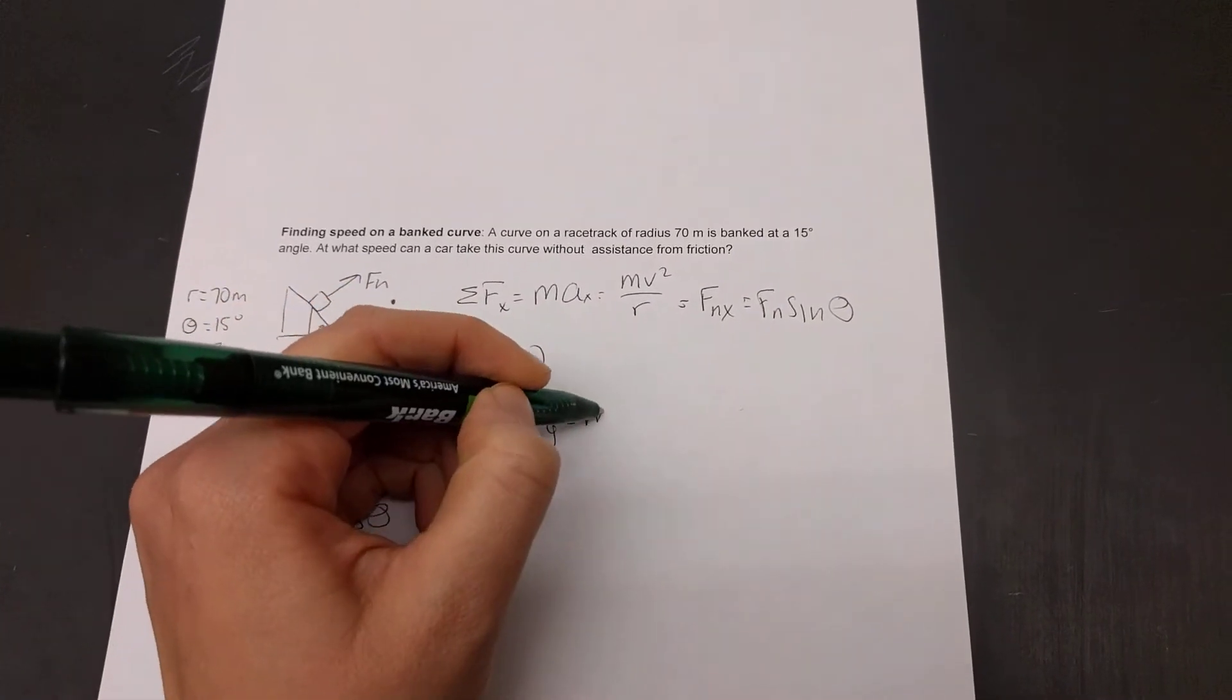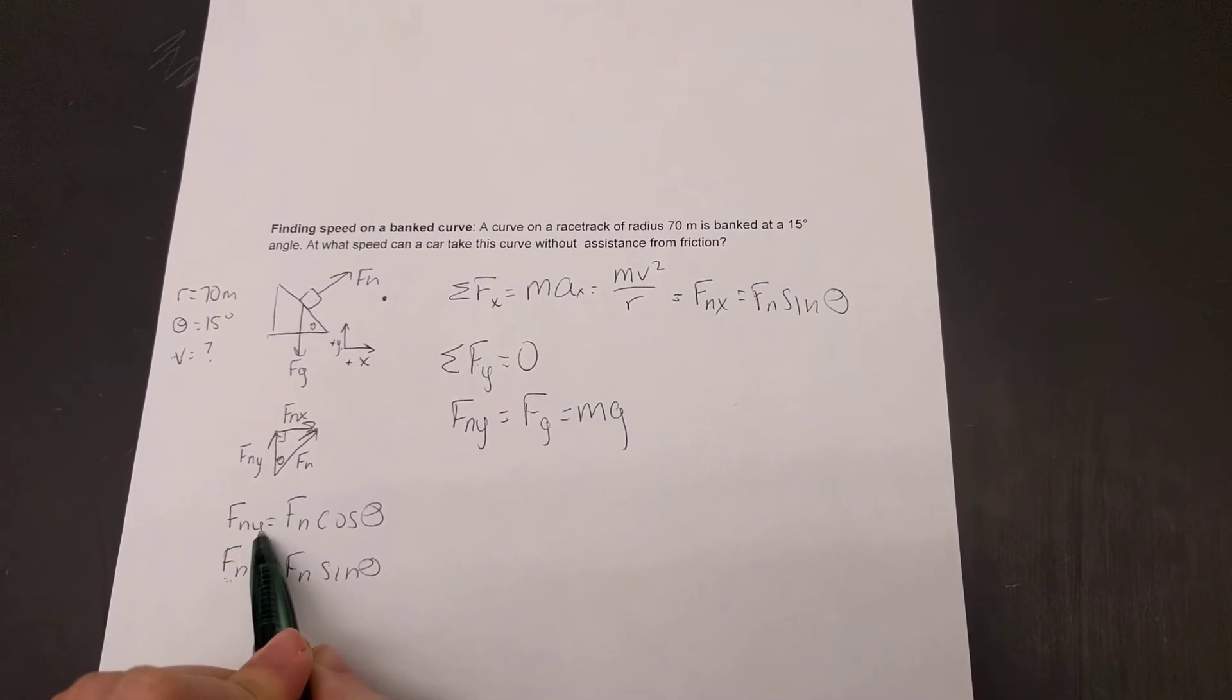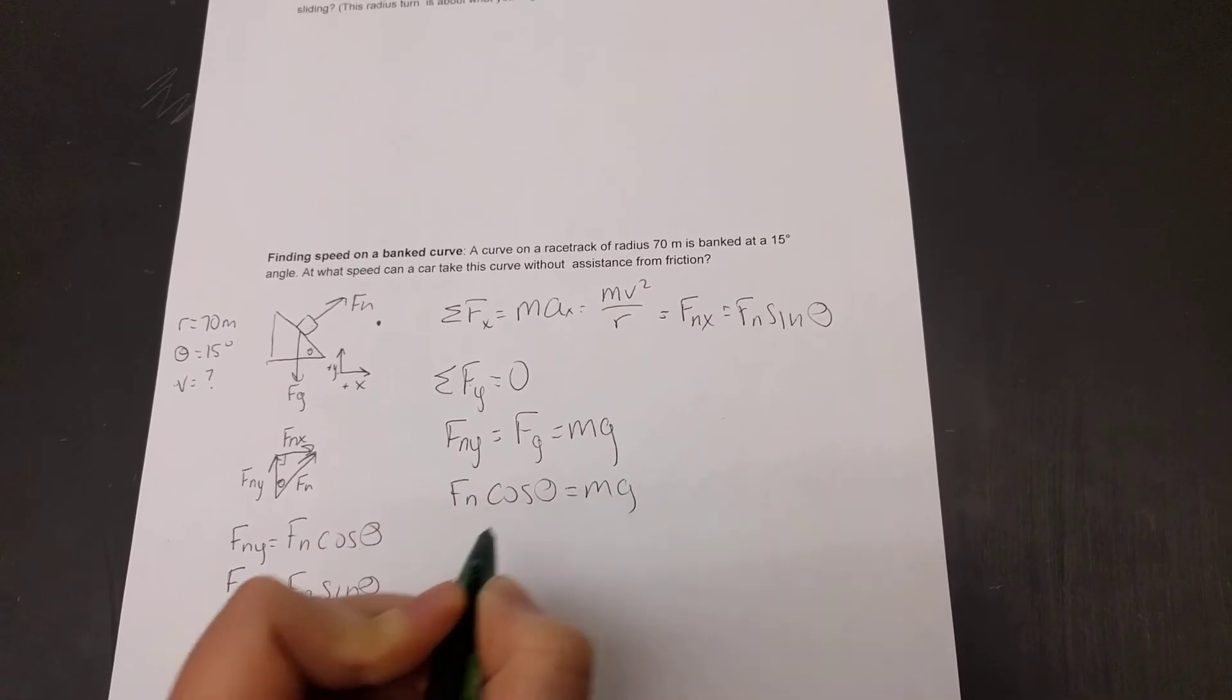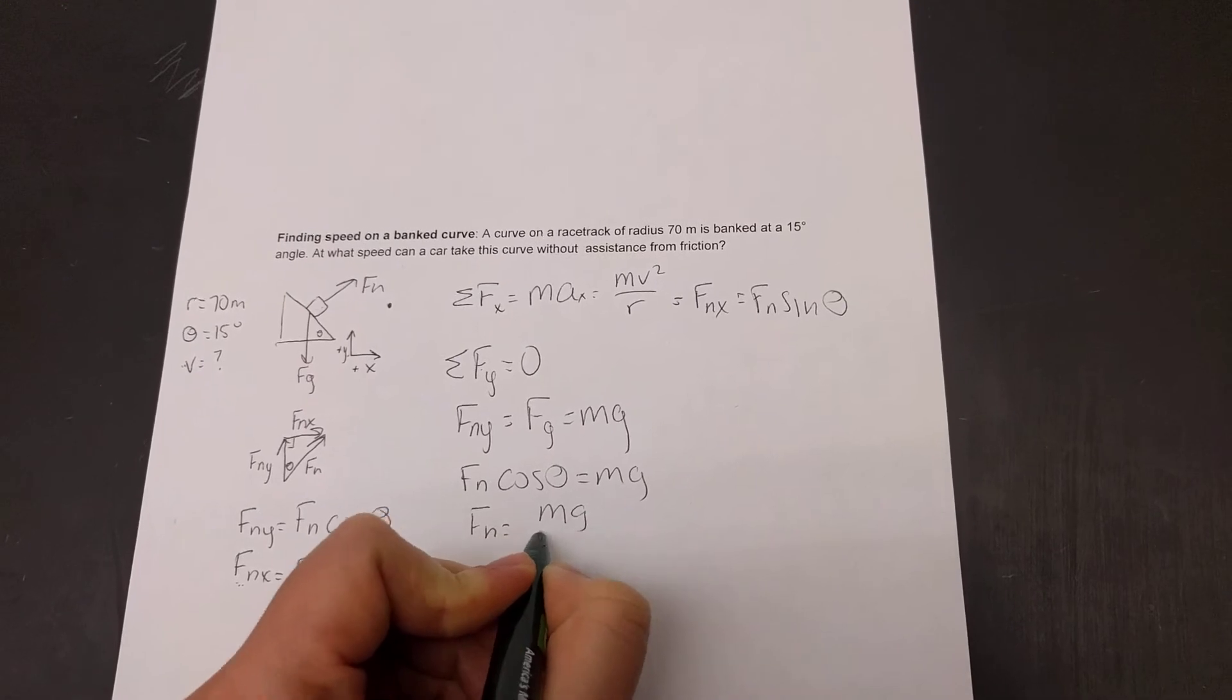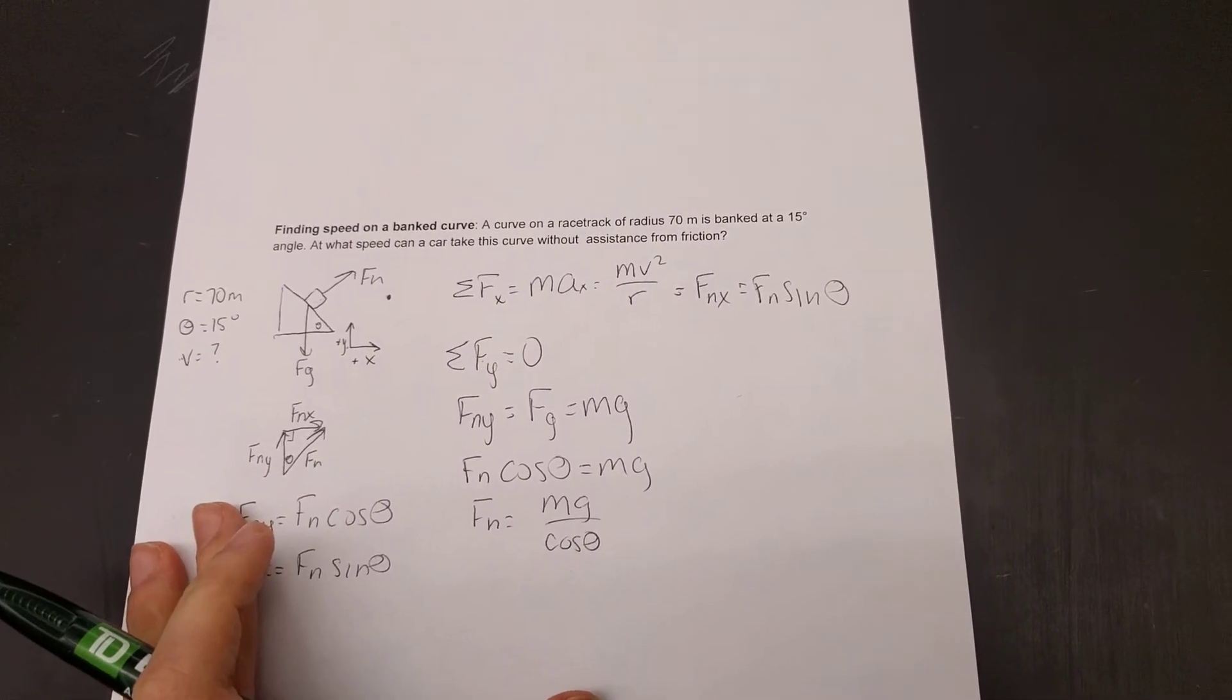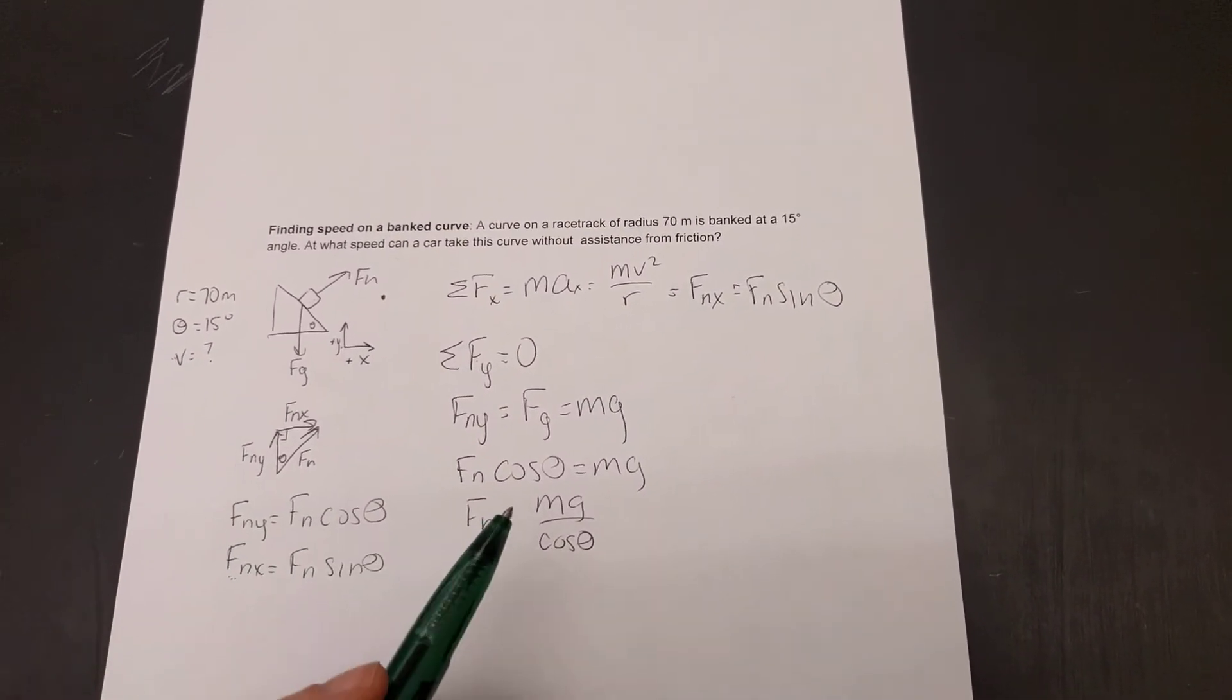So, if we sum our forces in the y direction, that's equal to zero. That tells us our normal force in the y is equal to our gravitational force. I'm going to rewrite that as just mg. Normal force in the y, we said, was fn cosine theta. So, fn cosine theta is equal to mg. So, we can rewrite this in expression for our normal force. That's going to be mg divided by cosine theta. So, this expression here is a little bit different, our normal force, than the expression we're used to having, but that's okay. The math told us this is true.